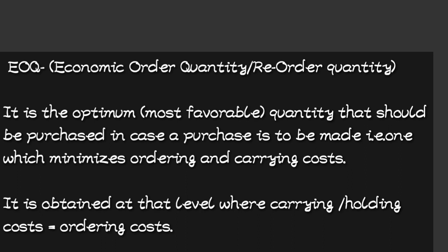The economic order quantity is obtained at the level where the carrying costs or holding costs are equal to the ordering costs — something like the equilibrium point. At that point where holding costs equal ordering costs, it represents the most favorable quantity that should be ordered whenever a purchase has to be made.